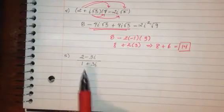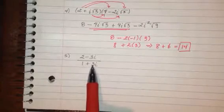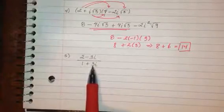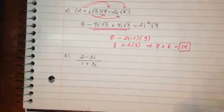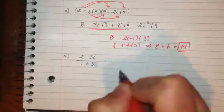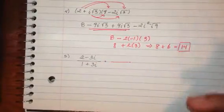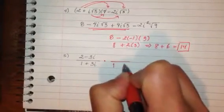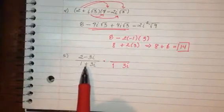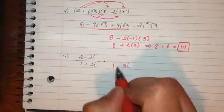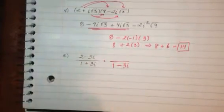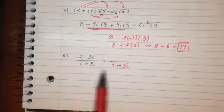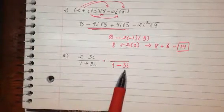Alright, number 5. The thing about dividing complex numbers is you cannot have imaginary complex numbers on the denominator. So how do we get rid of it? In order to do so, we have to multiply by what we call the conjugate. The conjugate uses the exact same numbers — 1 and 3i — but instead of a positive sign, you use a negative. This creates something like a difference of squares, where the i squared terms simplify out and the middle terms cancel.